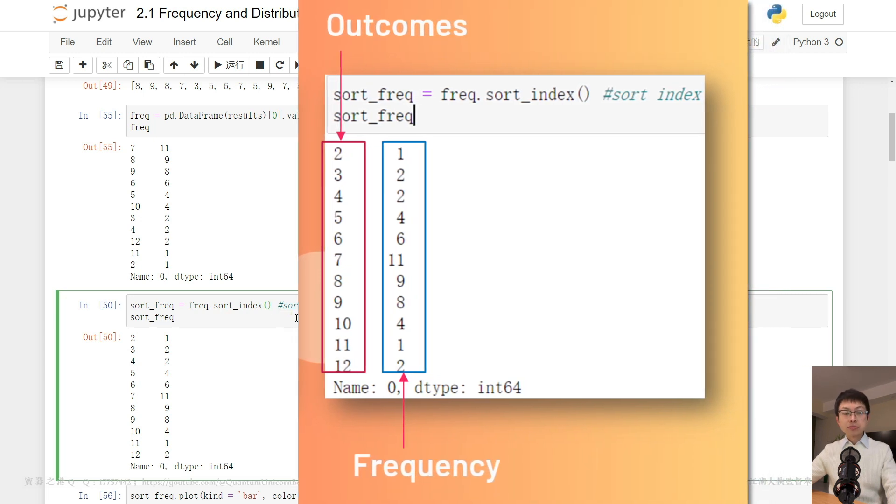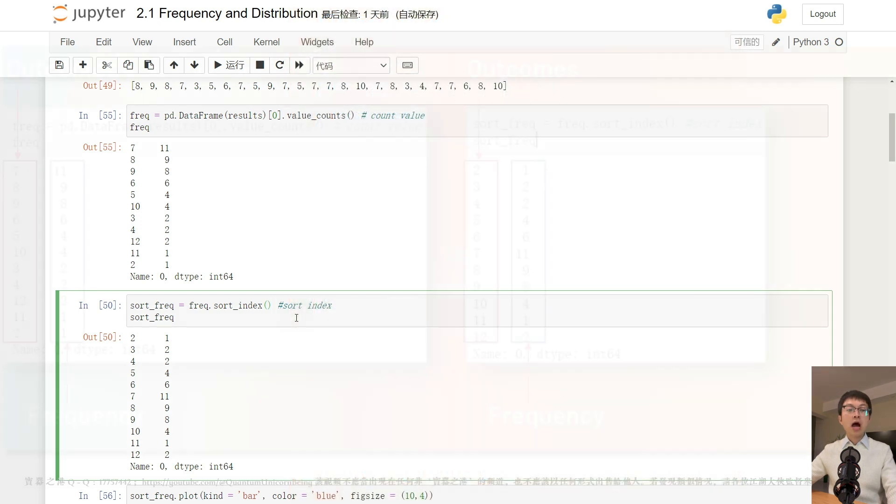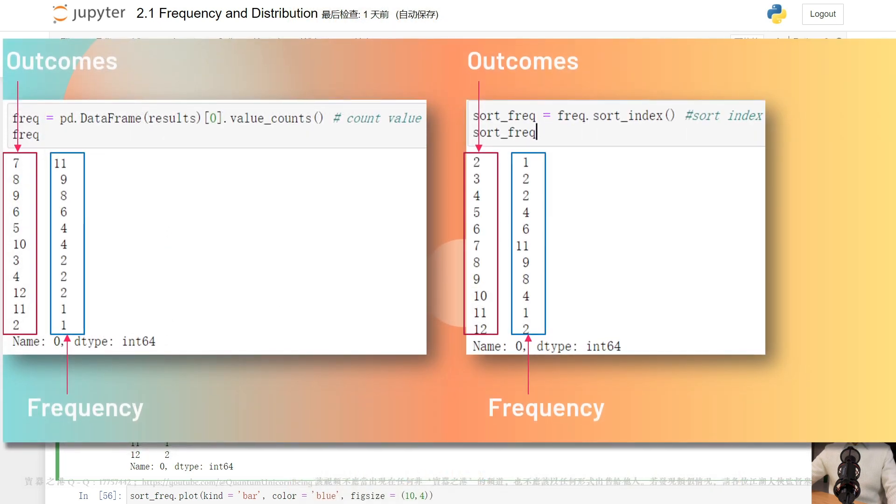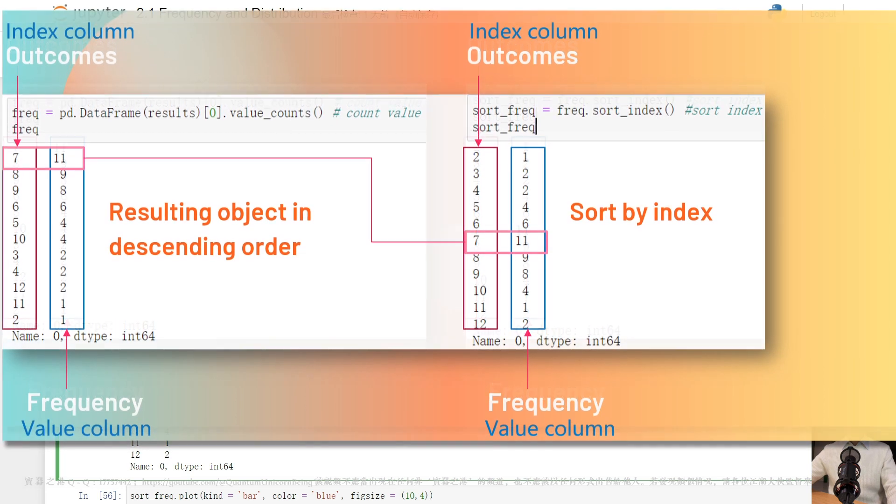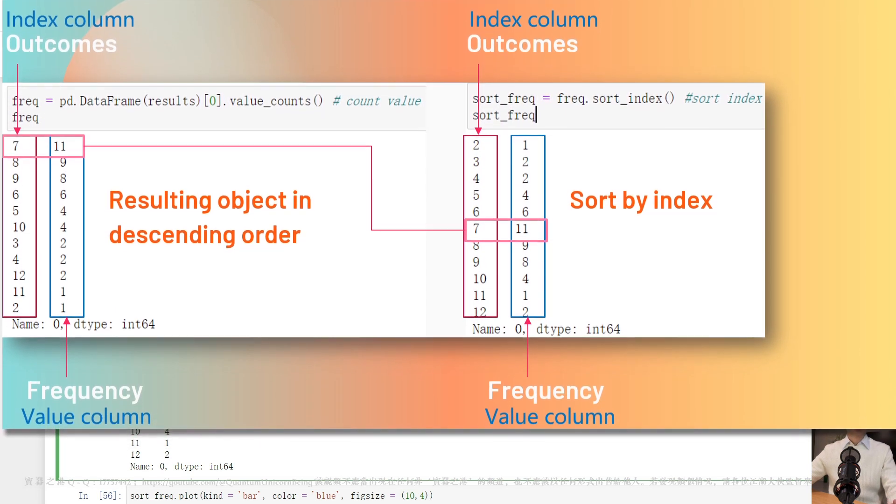For example, the first row of our output indicates that the frequency for an outcome of 2 is equal to 1.